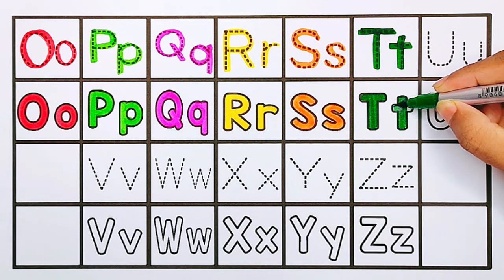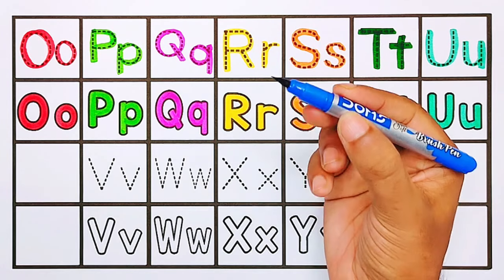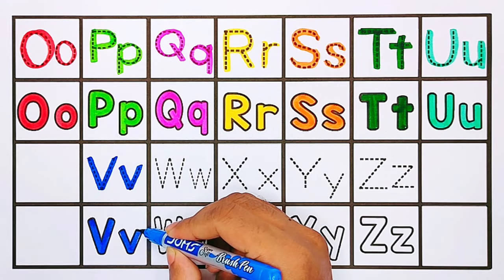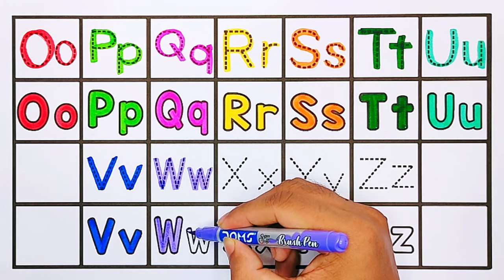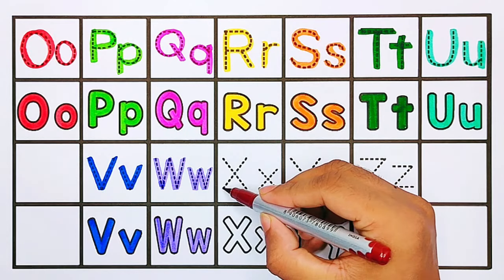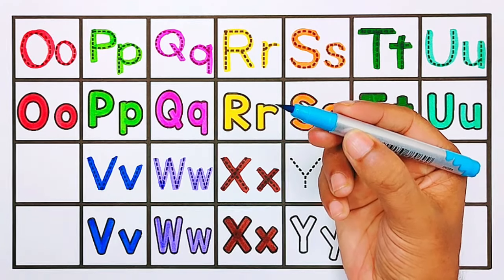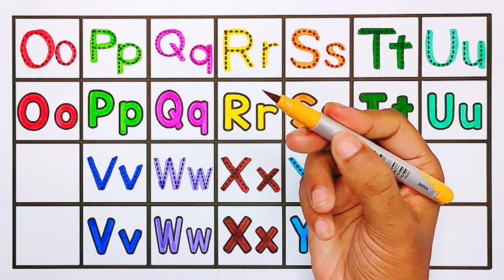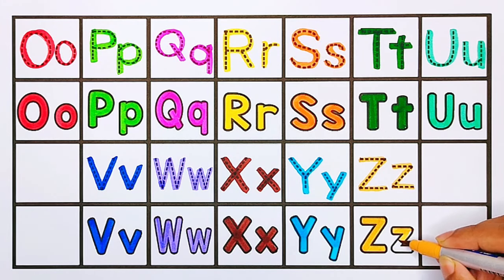U, U for unicorn. Blue color. V, V for van. Purple color. W, W for watch. Brown color. X, X for x-ray. Sky blue color. Y, Y for yoke. Yellow brown color. Z, Z for zebra crossing.